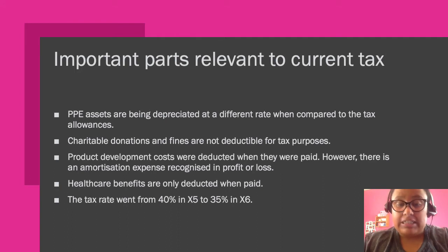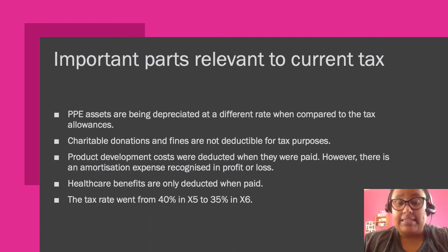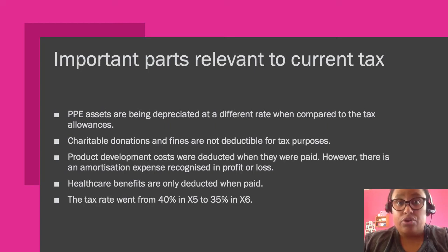We need to adjust our accounting profit to account for the fact that we are no longer receiving deductions for the amortization expense. Healthcare benefits are only deducted when paid — the liability moved from 2,000 last year to 3,000 in the current year, meaning a movement of 1,000 went through the income statement. Because we only get the deduction when it is paid, we have to reverse that effect. The tax rate also changed, which is important from a current tax perspective.